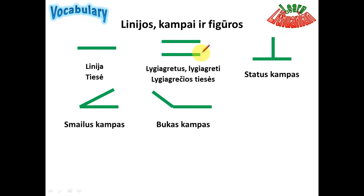These two parallel lines: lygiagretės, lygiagretės — because 'lygus' means equal and 'greta' means next to or close to. For example: 'jis stovi greta manęs' — he's standing close to me. So 'lygus' is equal, 'greta' means close to, giving us the word for 'parallel': lygiagretės tiesės — parallel lines.